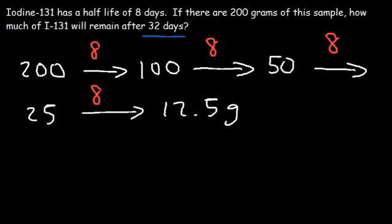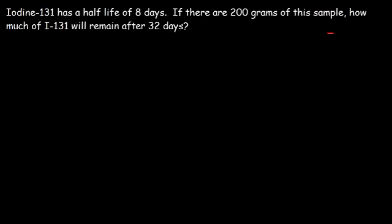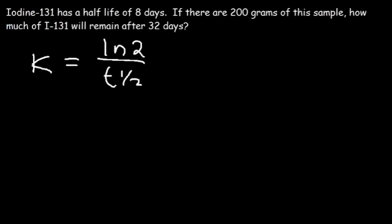Is there a way to get the same answer using an equation? Sometimes the numbers won't be as nice as what we just had. The first thing you want to do is find the rate constant K. The rate constant K is equal to the natural log of 2 divided by the half-life. The natural log of 2 is about 0.6931.